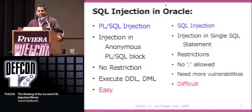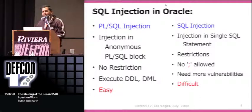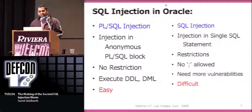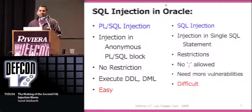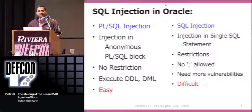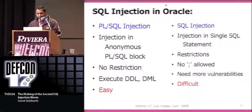So let's get started. When we talk about SQL injection in Oracle, there can be two broad categories depending on where your injection point is. Your injection point could be in an anonymous PL/SQL block, which will typically be called a PL/SQL injection, or you can have the injection in a single SQL statement like a SELECT query — a common example being the WHERE clause.